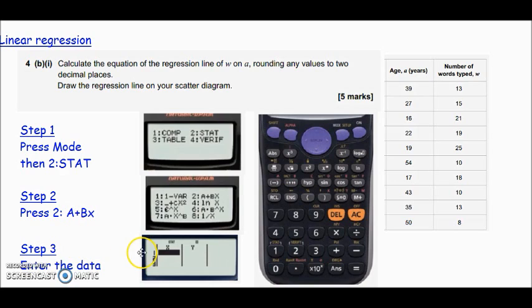If you press that option, you get a table which looks very much like the table we've got. On the x-axis we have the ages, so we can type the ages into the x column. Just type in 39, press equals, and it enters that value. Then start on the y values as well - scroll across to the y column, type in the value, press equals. Pause the video, enter that data into your calculator, and then I'll show you how to carry on.